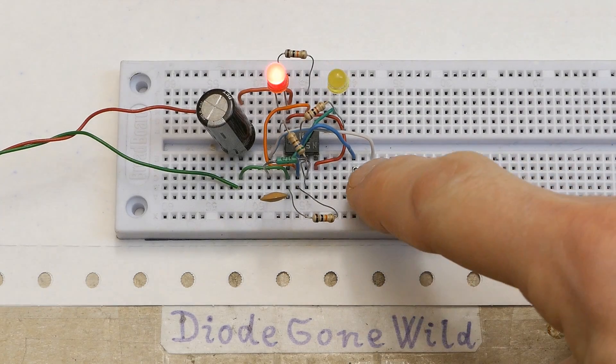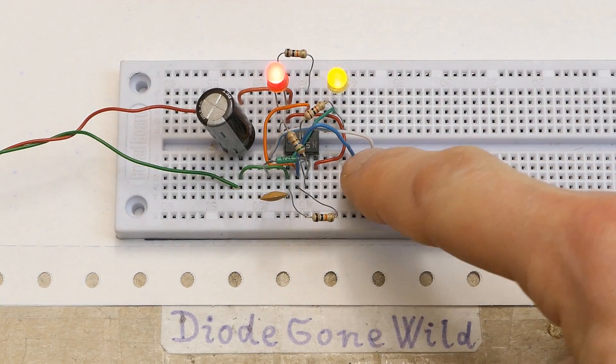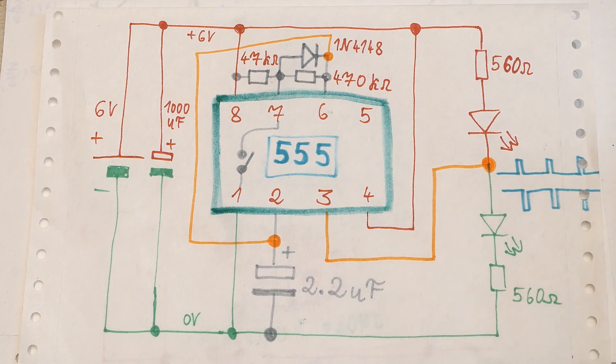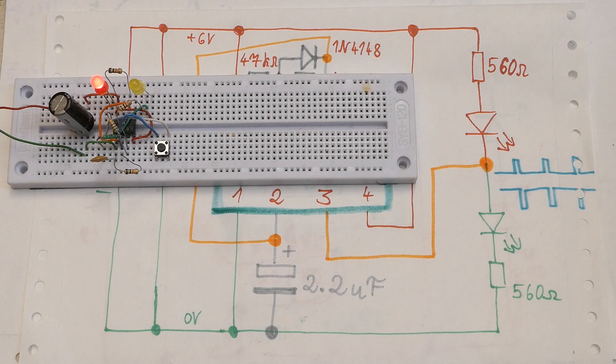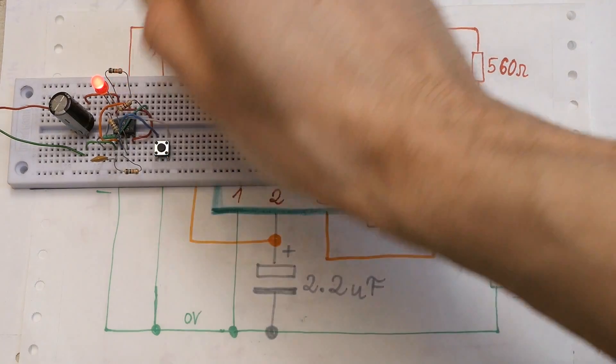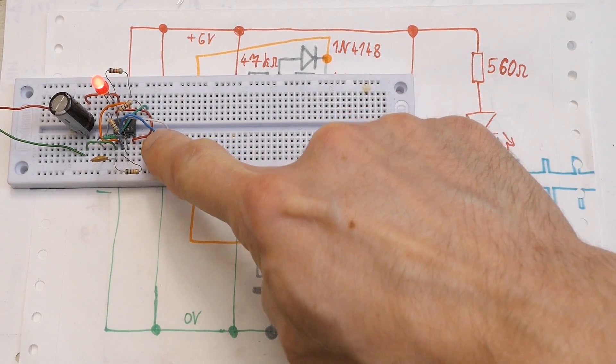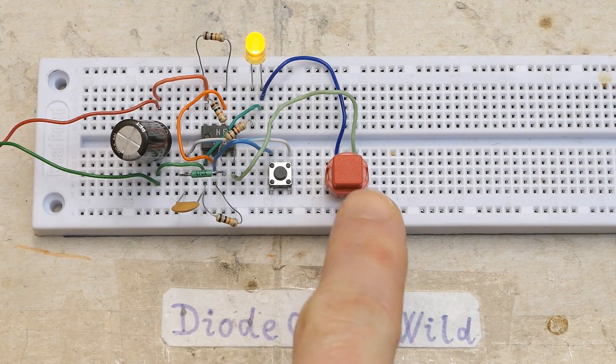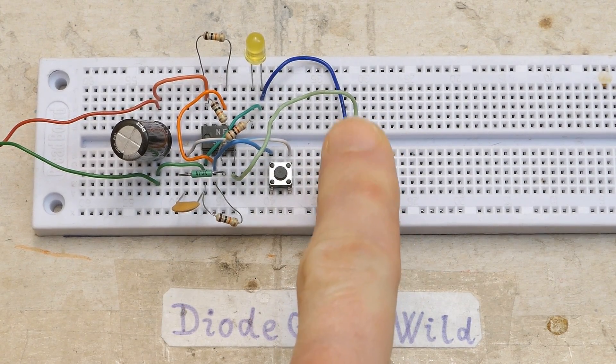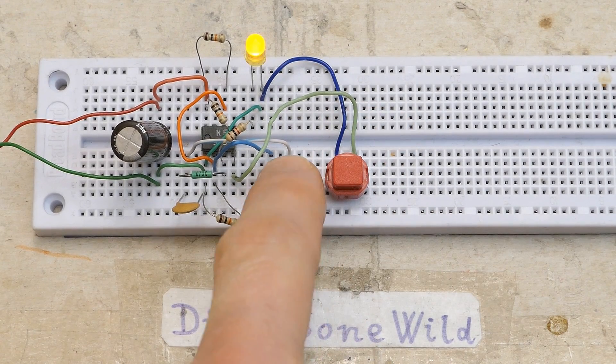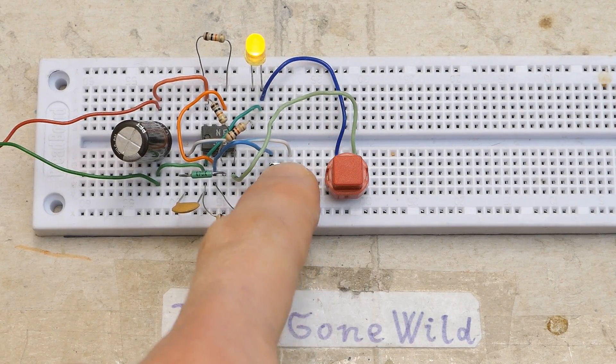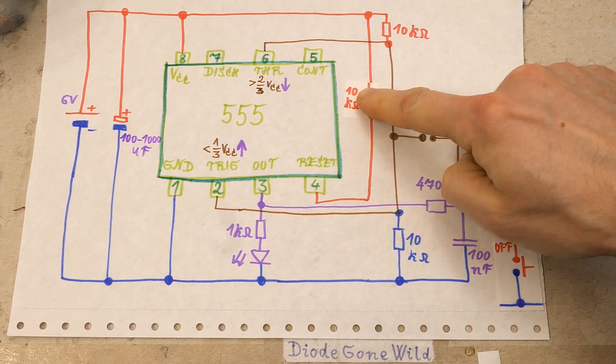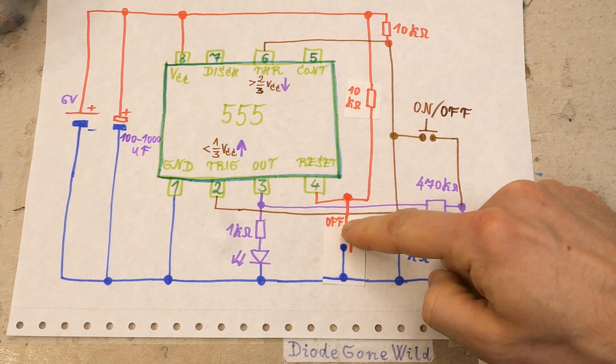And of course you can use this circuit with two LEDs. One going from the positive to the output and one from the output to the negative, just like I did it in the previous episode. And you could also flip it and the negative level could mean on and the positive off. And to the single button on-off circuit you can also add some sort of an emergency off button, which only turns it off and not on. And this is done by adding a resistor here and the button here.